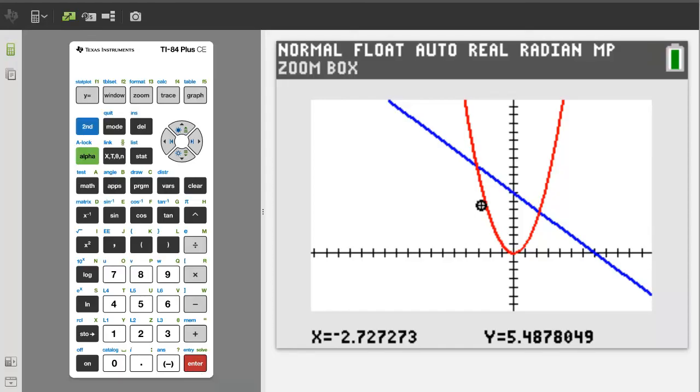From here you can press the trace button to find the intersection points of the line and the parabola. Press the trace button. Using the trace button is another video. Okay, that is it. If you like this video, please give it a thumbs up and subscribe to this channel.